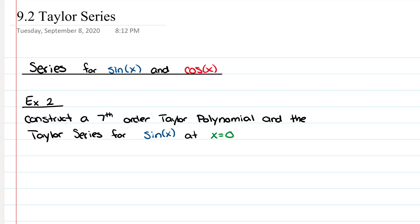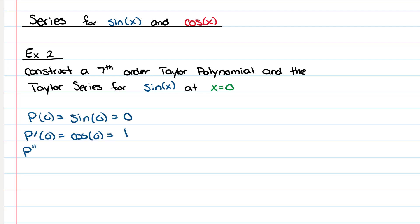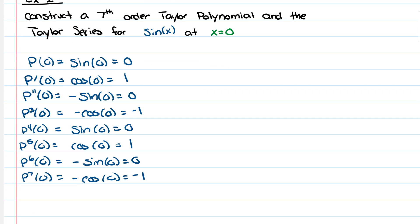What happens is your calculator runs this series and plugs in the x value you want into the Taylor polynomial. So the first thing we want to do, if we want to construct a Taylor polynomial, is compute a bunch of derivatives. If I want the seventh order Taylor polynomial, I need the seventh derivative, so let's start taking derivatives one by one, seven times, and plug in zero.